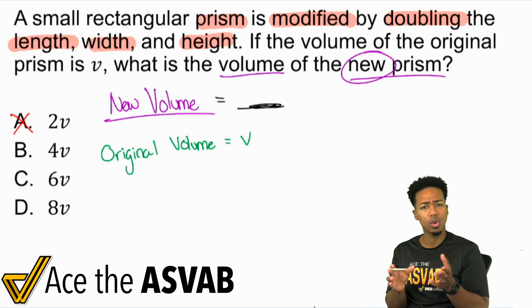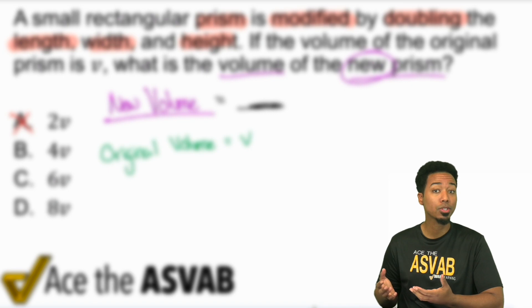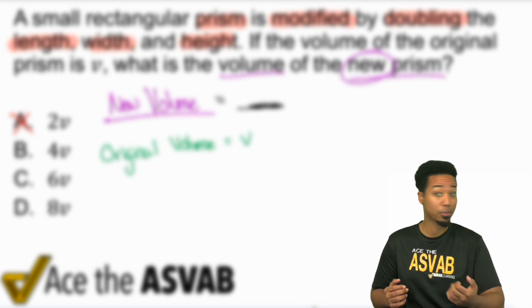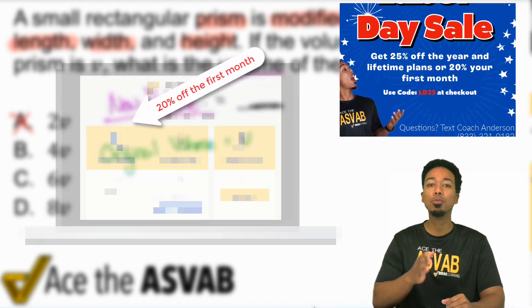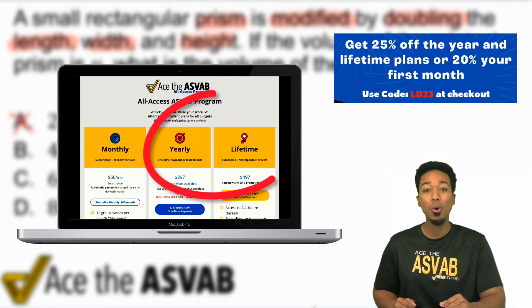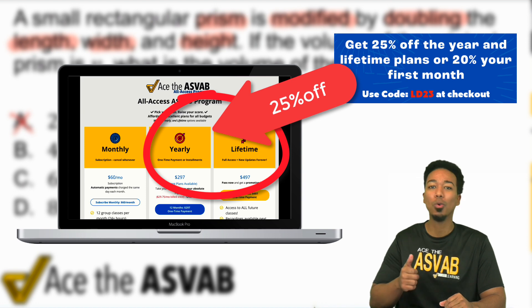If you're thinking that the volume is going to double, you're absolutely incorrect, but I want to explain why. And remember that it's really important to use good materials to study for the ASVAB. So if you're looking for great materials, go ahead and take advantage of our Labor Day sale where you can get 20% off your first month of our ASVAB all-access program or 25% off the year or the lifetime packages.